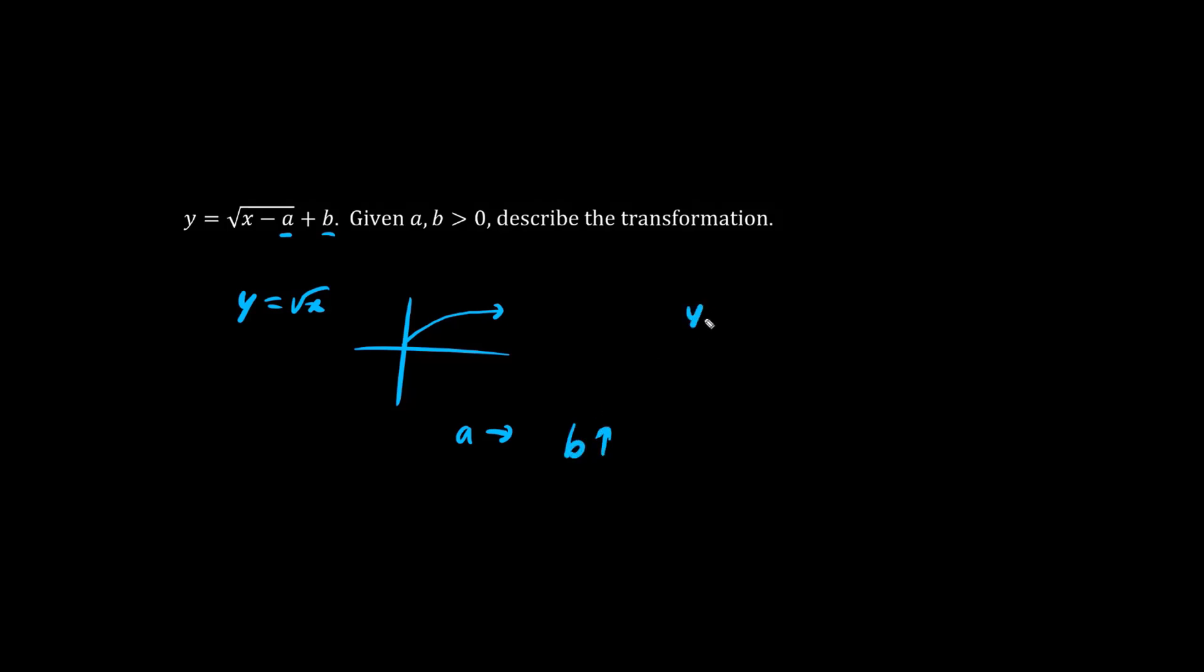For example, if y equals the square root of (x minus 2) plus 3, where a is 2 and b is 3, what happens to this beginning, this vertex of this graph at (0,0), the origin? It moves to right, 1, 2